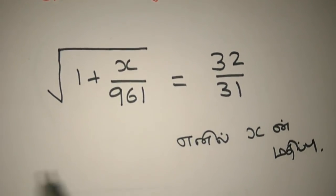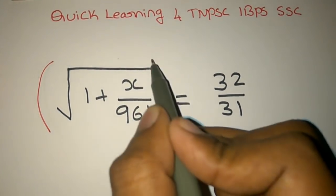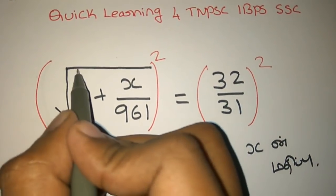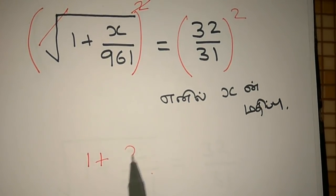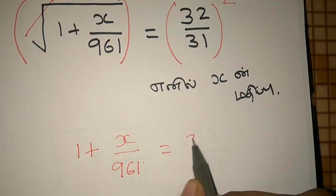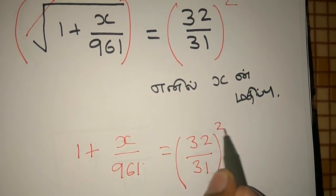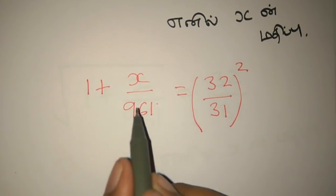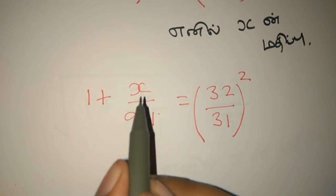So let's do this — the square is the square. Now we can cancel the square. 1 plus x by 961 equal to 32 by 99. If you have another square, you can cancel the square. The x happens to be 1.